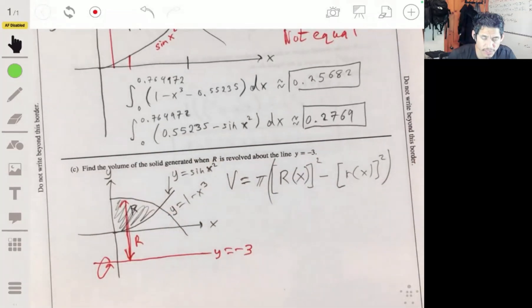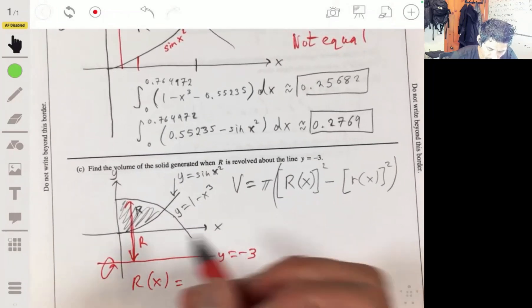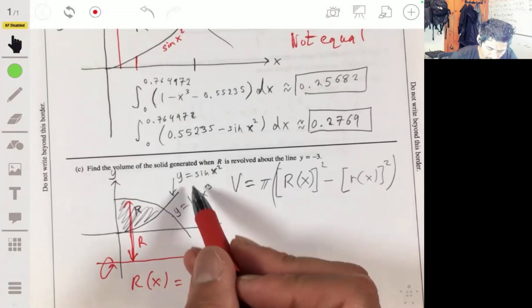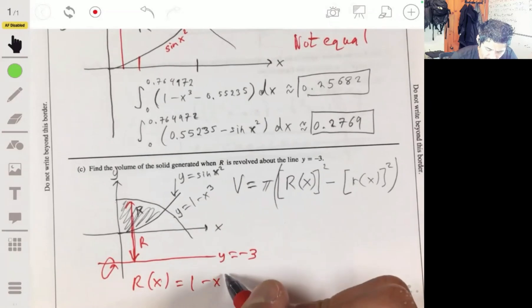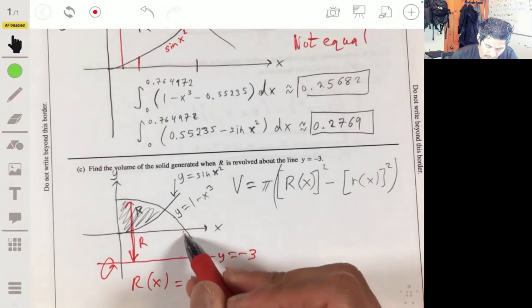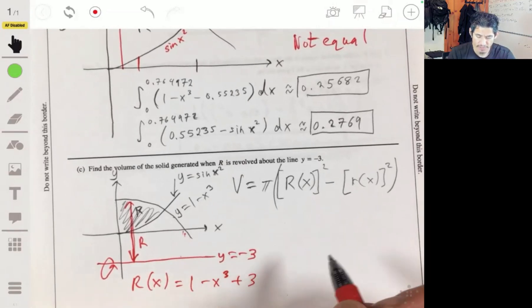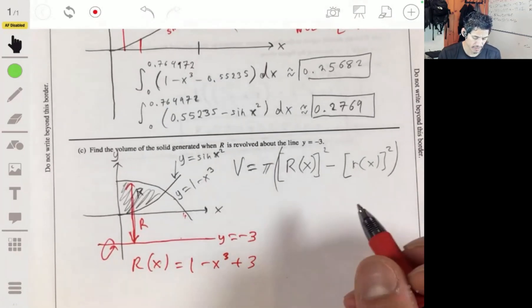Big R is going to be, big R of x is going to be this equation, 1 minus x cubed plus this length. It's always stays as 3. This will be our large radius, our large R of x.